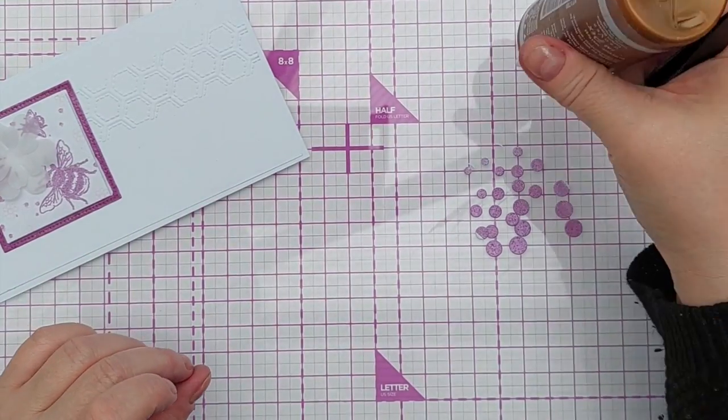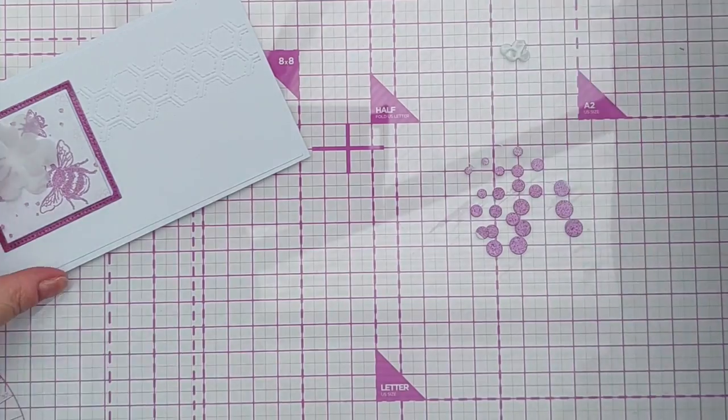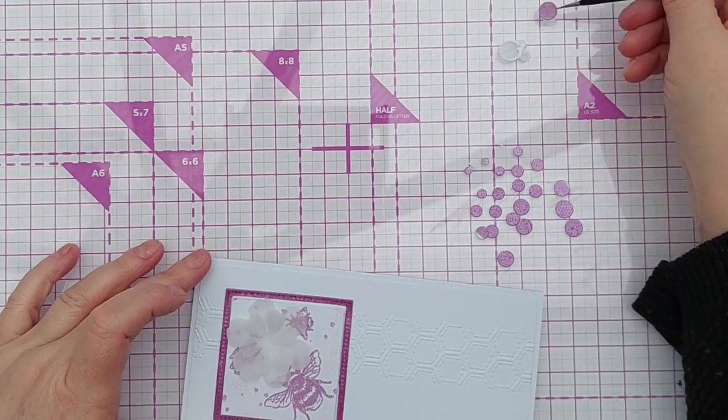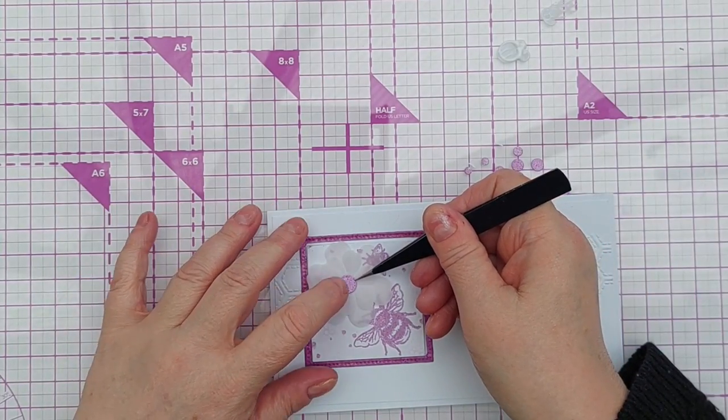I'm going to use some tacky glue, take one of the big circles and add that to the center of my flower.